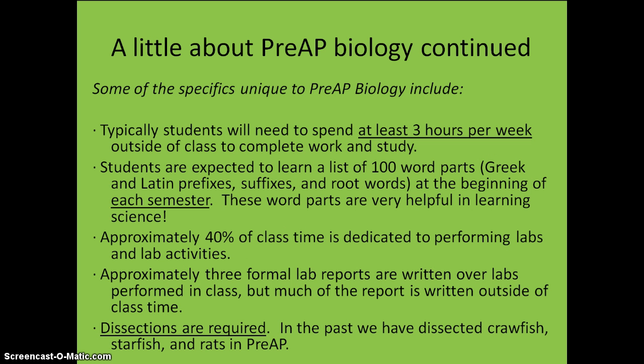Some of the specifics unique to Pre-AP Biology include: typically students will need to spend at least 3 hours per week outside of class to complete your work and study. Students are expected to learn a list of 100 word parts — Greek and Latin prefixes, suffixes, and root words — at the beginning of each semester. These word parts are very helpful in learning science. Approximately 40% of class time is dedicated to performing labs and lab activities. Approximately 3 formal lab reports are written over labs performed in class, but much of the report is written outside of class time.